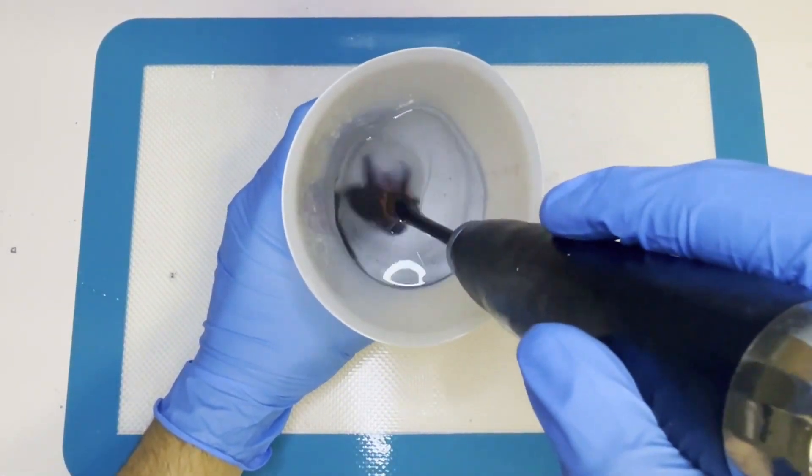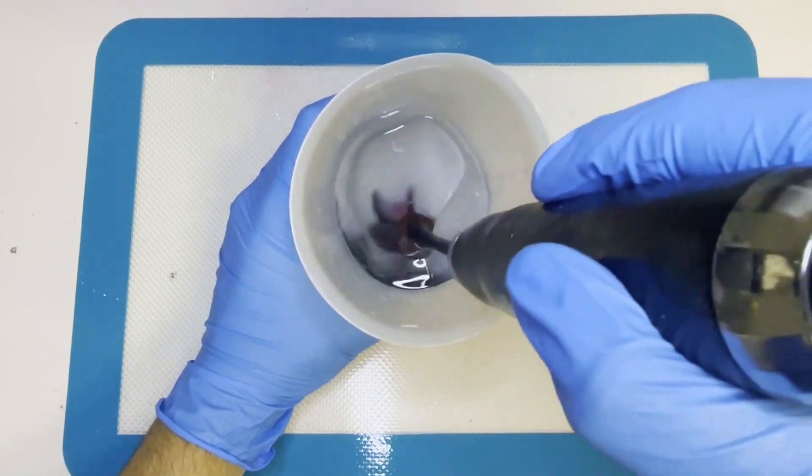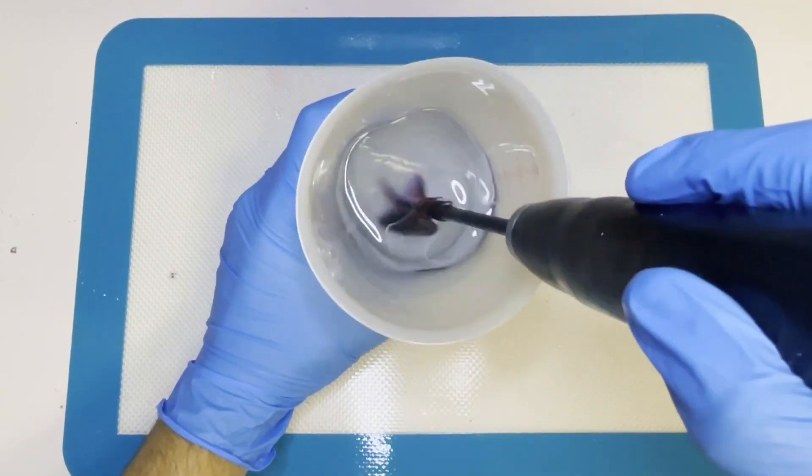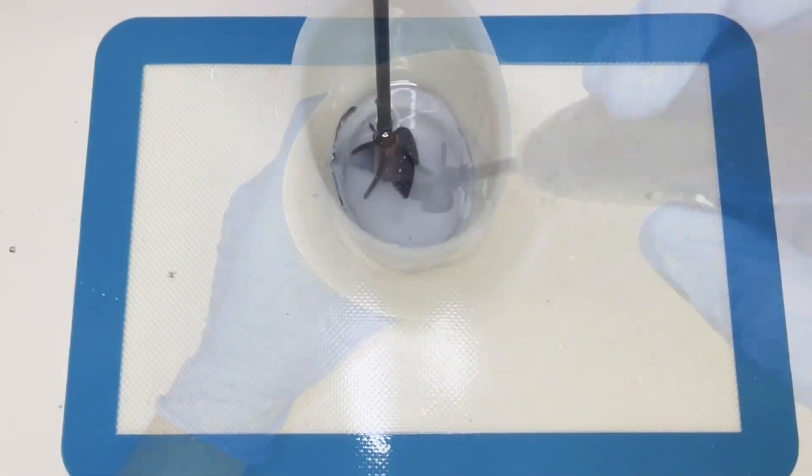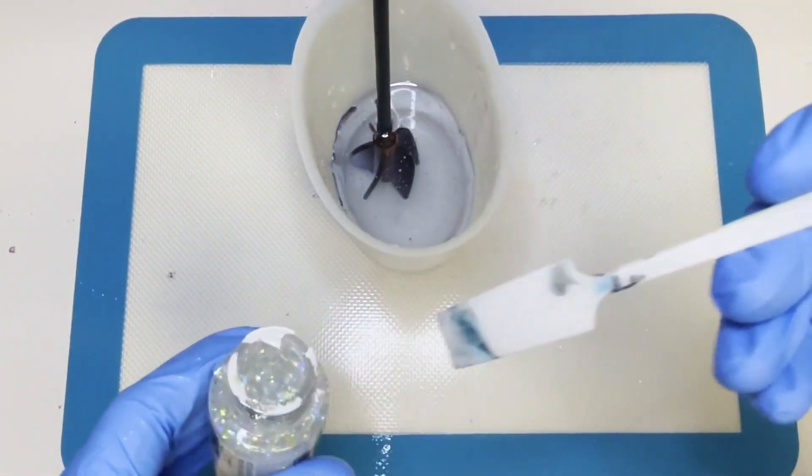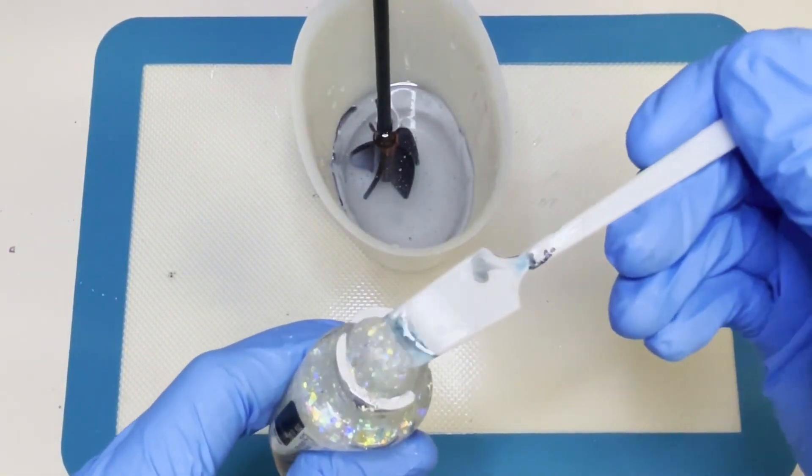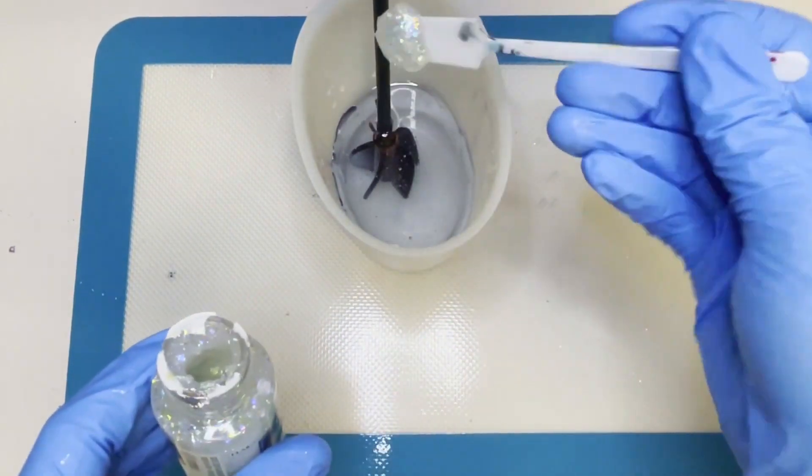Either when it's fully mixed or just before, you can add in the coloring and any inclusions you want and then mix those together with the resin. Now to keep it simple, I'm only going to use this one glitter and one color and that is it.